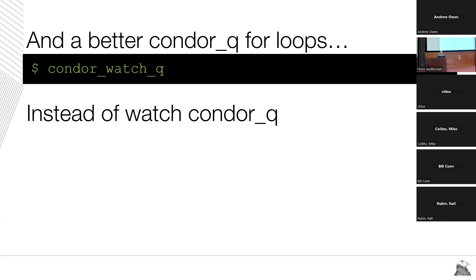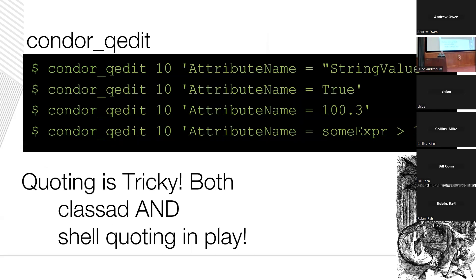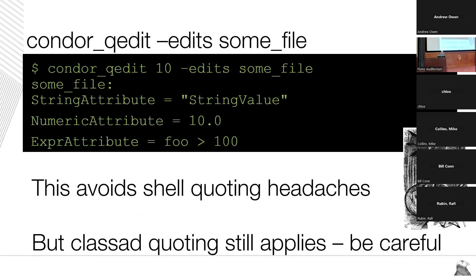condor_watch_q we talked about twice before, so I won't cover that again. In the condor_q family there's also condor_q_edit, which makes changes to a job that has already been submitted. An important note: condor_q_edit only makes changes in the schedd's copy of the ad — once the job is running, changes don't propagate to the execute point. Quoting is tricky because we have both shell and ClassAd quoting. One uncommonly used option is condor_q_edit --edits, which takes a file, getting around shell quoting — though you still need ClassAd quoting, so be careful.